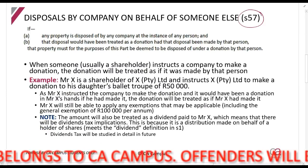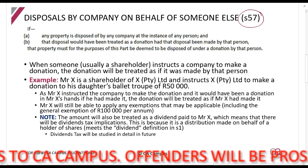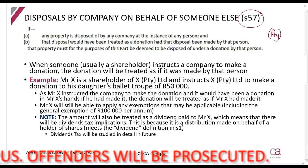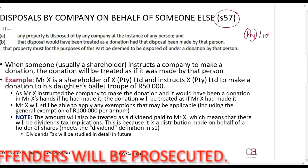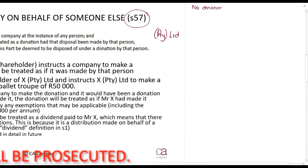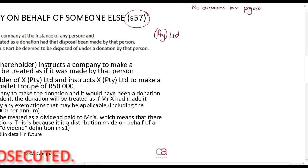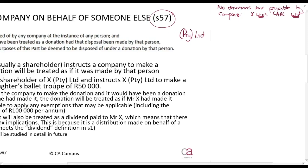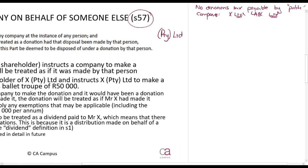Section 57 applies if there's a disposal by a company on behalf of someone else. It is important that this is a PTY Ltd, a private company, because there's no donations tax payable by public companies — things like X Ltd, ABC Ltd. Public companies are exempt, something you'll study separately. But private companies are not exempt.